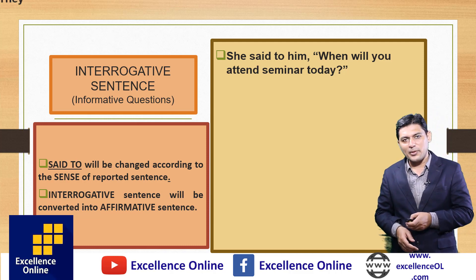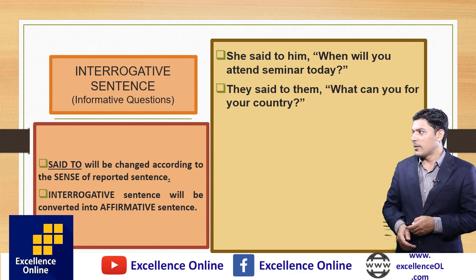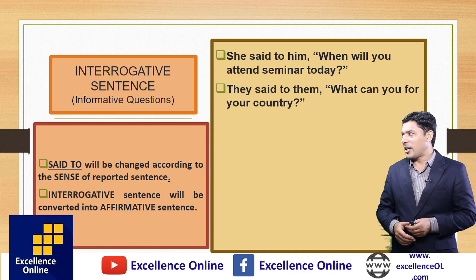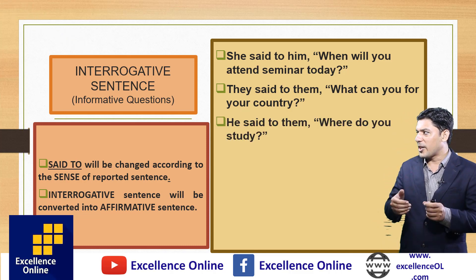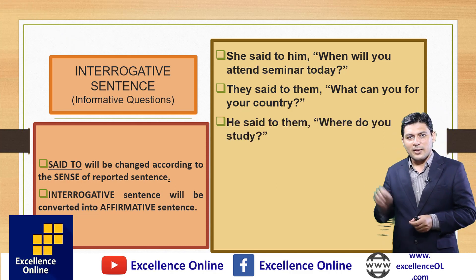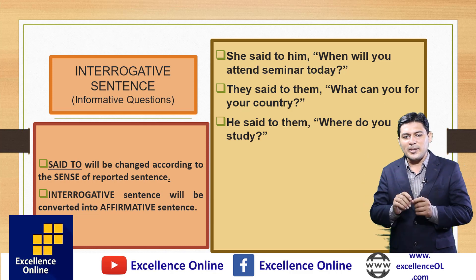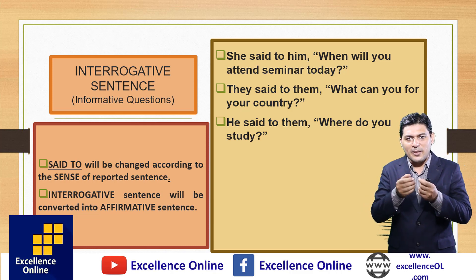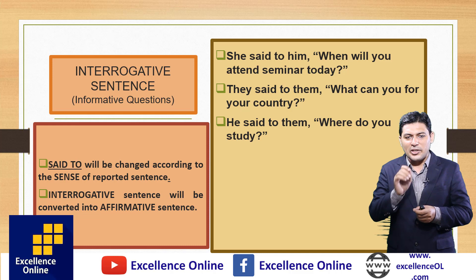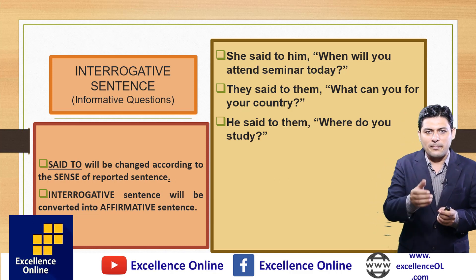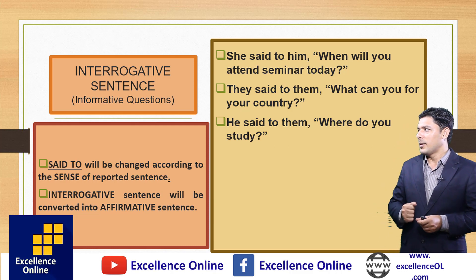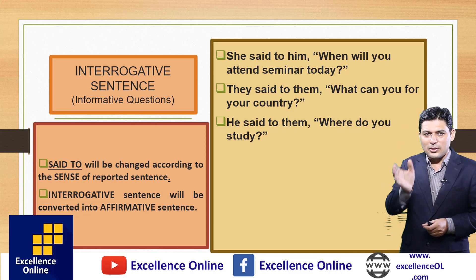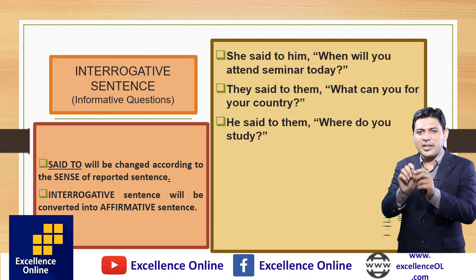Another example: 'They said to them, what can you do for your country?' And: 'He said to them, where do you study?' It starts from 'where,' a WH word. 'He said to them' becomes 'he asked them.' 'Where' remains the same. 'You' changes according to the object 'them.' Result: 'He asked them where they studied.'